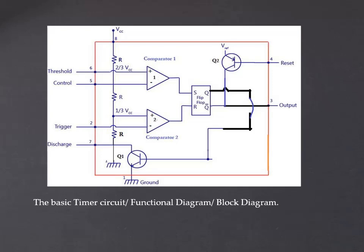The third pin is the output pin, pin number 3, connected to the Q bar of the SR flip-flop. This output can be connected in two ways. We can have the output between pin number 3 and ground, called normally off load. If the output is measured between pin number 3 and VCC, it is called normally on load.